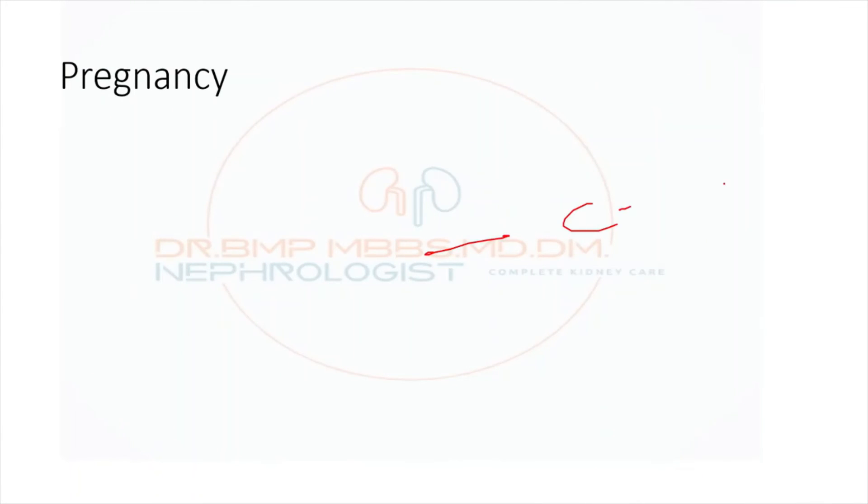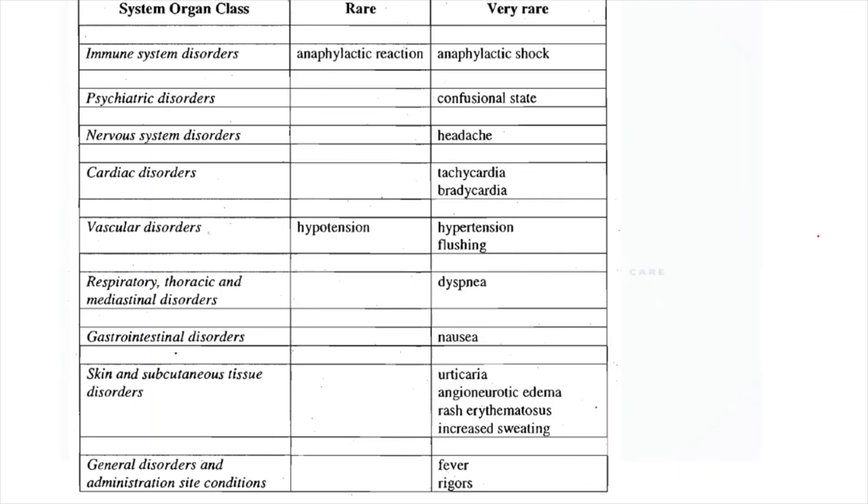In pregnancy, it comes under category C drug. This is one theoretical table showing the side effect or adverse event profile of the serum albumin injection. Common side effect we encounter is hypotension, and sometimes itching, rash can be there, and these are all the other theoretical side effects.